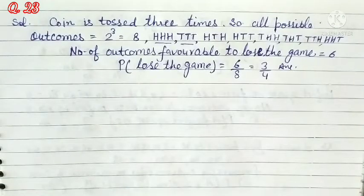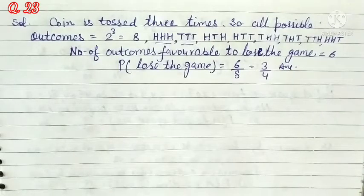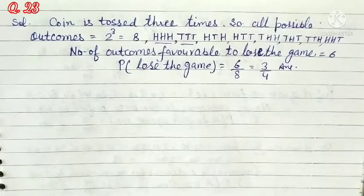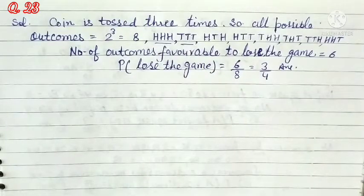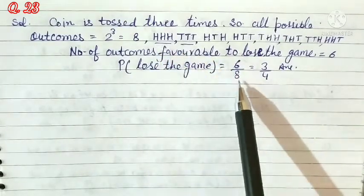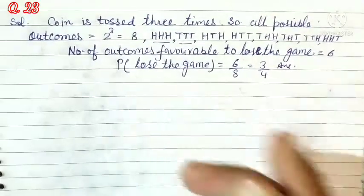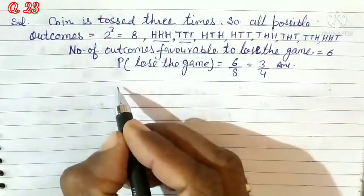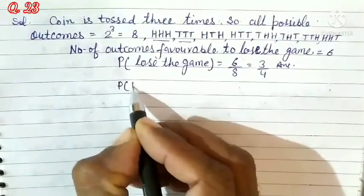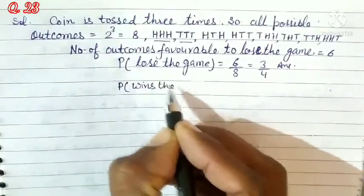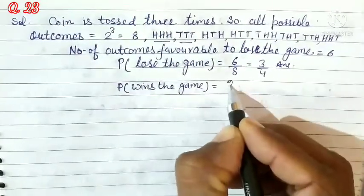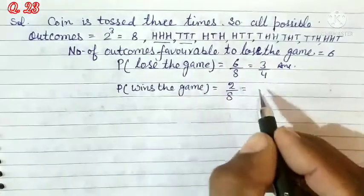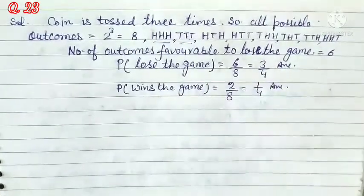If we also ask what is the probability that Hanif wins the game, the favorable cases for winning are only 2, so P(wins) = 2/8 = 1/4.